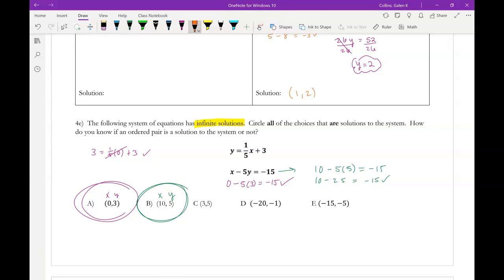Well, let's look at C. At least one of these has to not work. All right, so for C, 3 is x, y is 5. I'm going to use standard form again. So 3 minus 5 times 5 equals negative 15. Well, I know this isn't true because 10 minus 25 is negative 15, not 3 minus 25. So, since that does not work out, C is not a solution to the system.